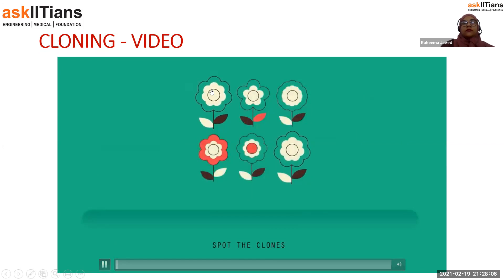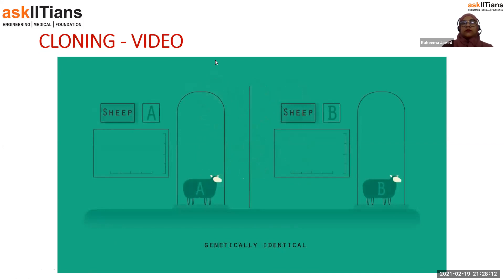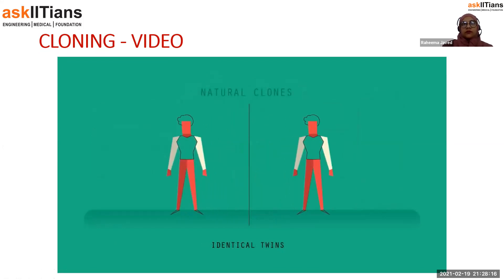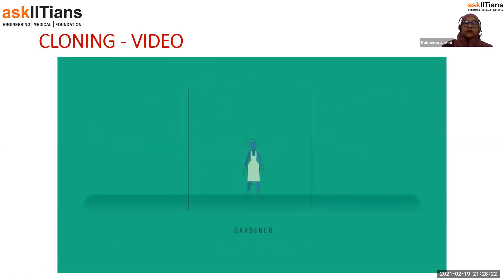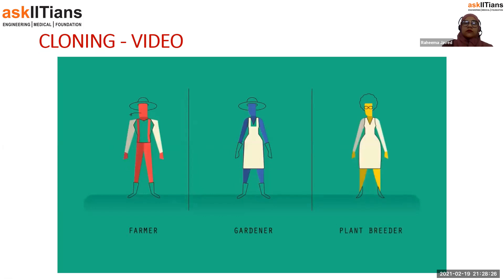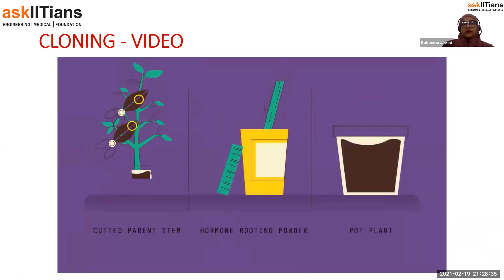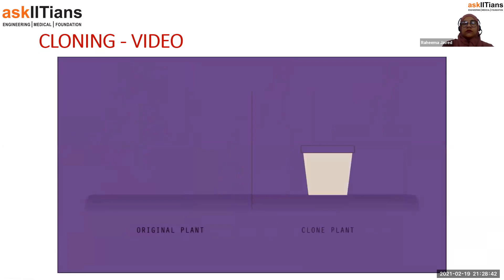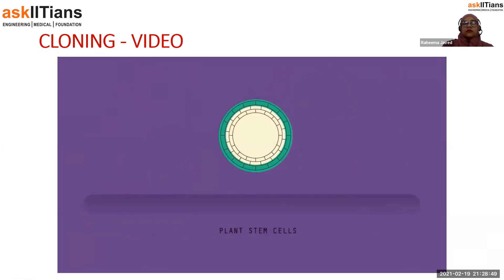When we talk about clones in science, we mean organisms that are identical copies — they have the same DNA as each other. Identical twins are examples of naturally occurring clones. Both plants and animals can be cloned. A gardener, farmer, or plant breeder might want to make many copies of a particular plant quickly. The easiest and cheapest way is to take cuttings.